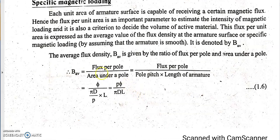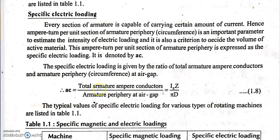Two more terms are specific magnetic loading and specific electric loading. Specific magnetic loading B_average is flux per pole divided by area under a pole. The flux per pole is φ, and the area under a pole is the pole pitch multiplied by the armature length L, where pole pitch = πD/P. So B_average = Pφ / (πDL). Specific electric loading AC is total armature ampere-conductors divided by armature periphery at the air gap. The total armature ampere-conductors is Iz × Z and the armature periphery is πD.